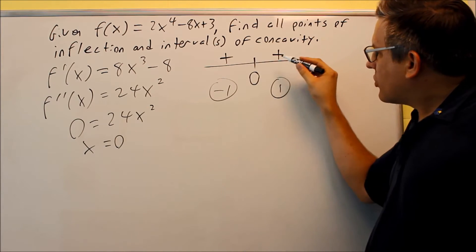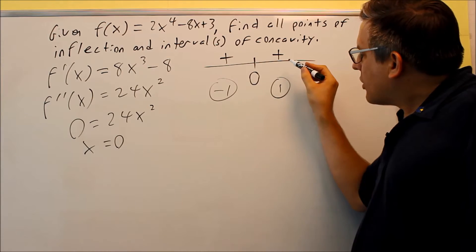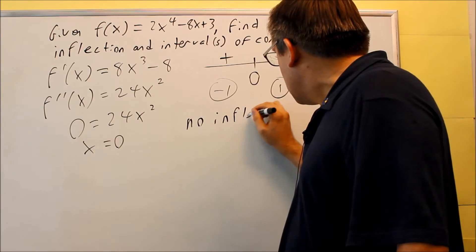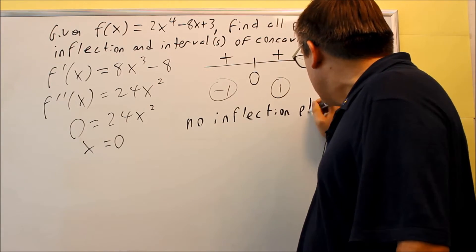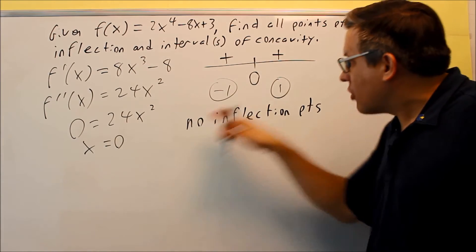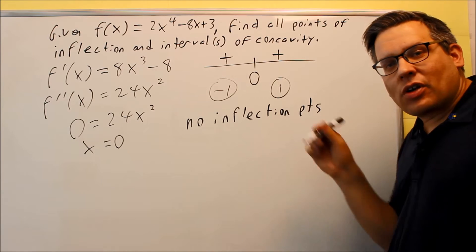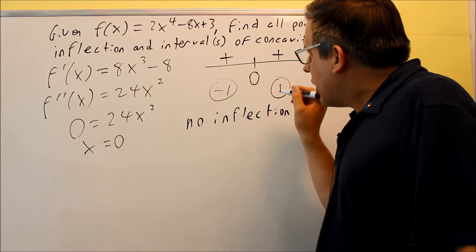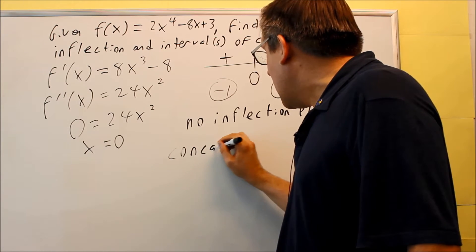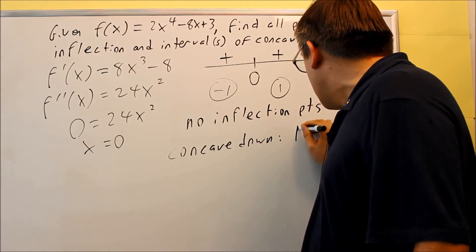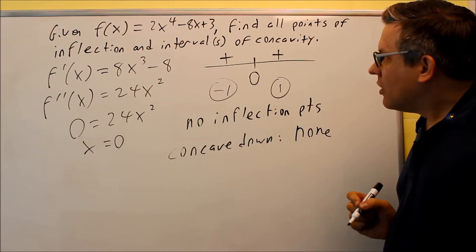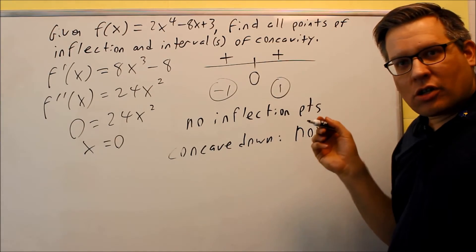In this situation, there are no inflection points on this particular problem. When you find the answer, you can't assume it's an inflection point unless you actually check the number line to see if the concavity changes. Looking at concavity: concave down is going to be none also because there are no negatives, so the graph is never going to be concave down. What does this graph actually look like? It's kind of a parabola, but it has a flattened bottom whenever you have the fourth power.